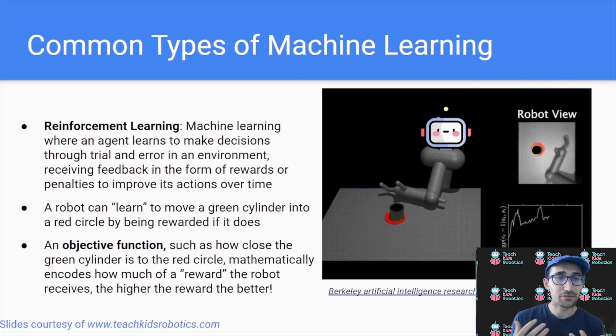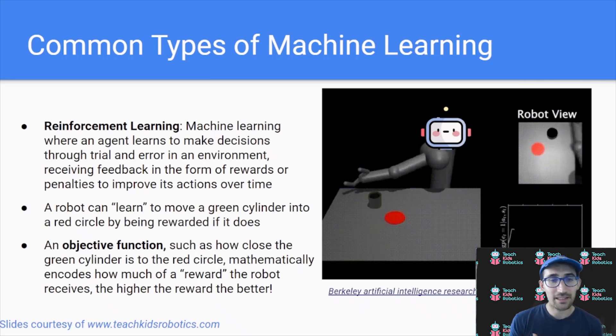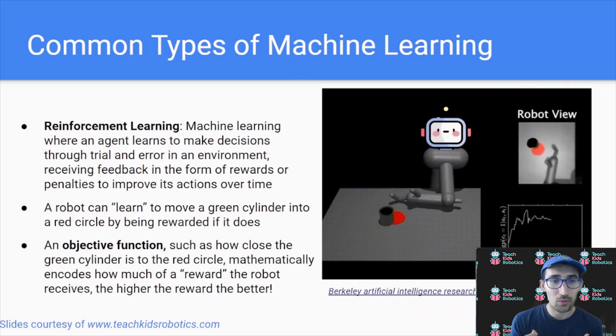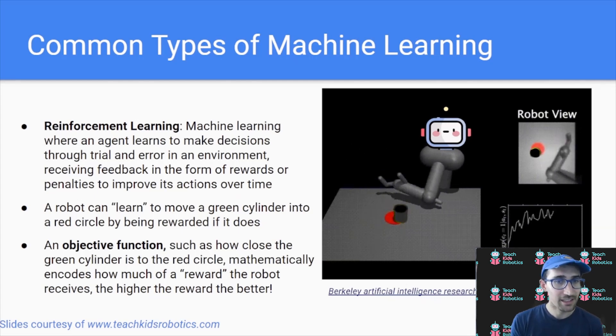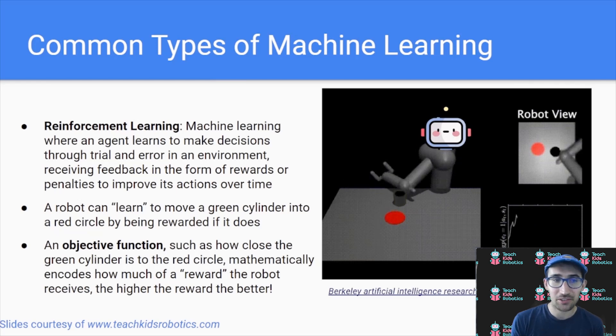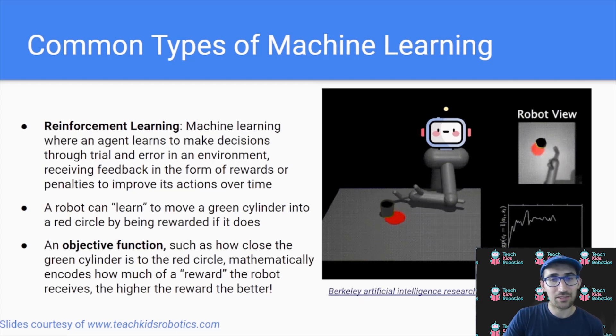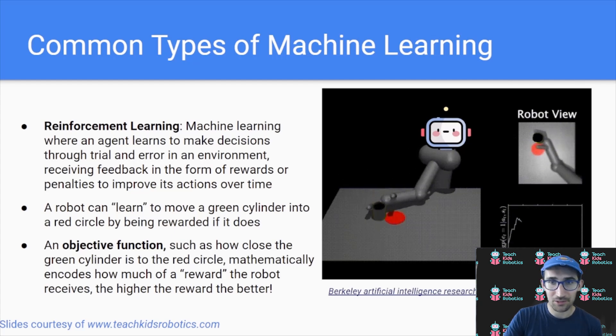And we call this an objective function, which is how we can mathematically explain what we want the robot to do and what the reward is based on. And in this case, it could be how close the green cylinder is to the red circle. This allows us to encode that reward, and the robot is going to be attempting to maximize its reward, which in this case means maximizing the correct behavior that we encode.